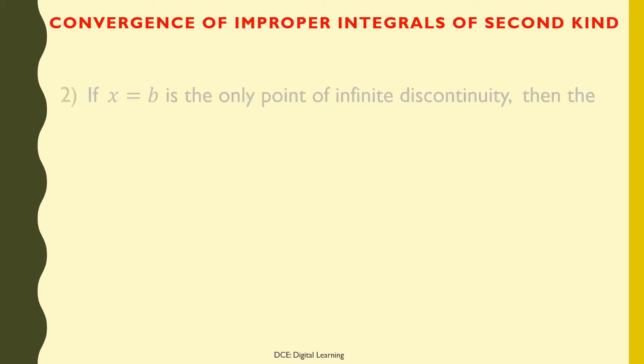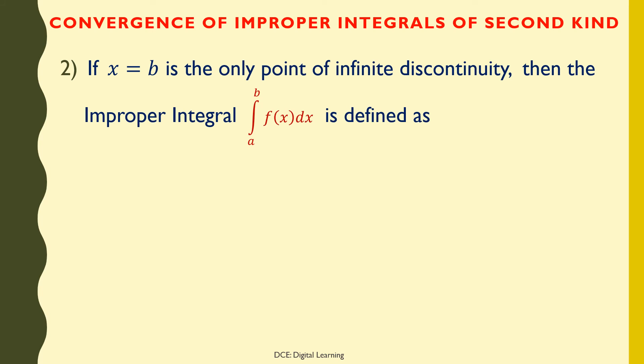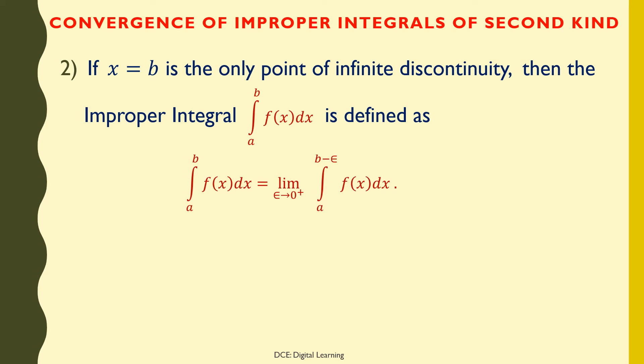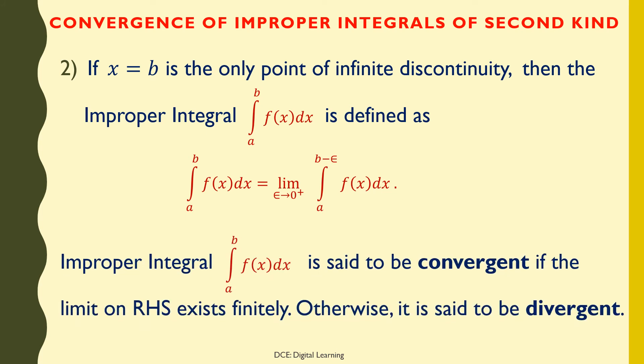If x = b is the only point of infinite discontinuity, then the improper integral of f(x) dx from a to b is defined as the limit of the integral of f(x) dx from a to b − ε as ε tends to 0 from the right. This improper integral is convergent if the limit on the right-hand side exists finitely; otherwise, it is divergent.